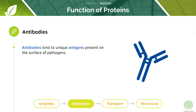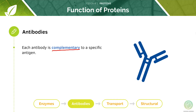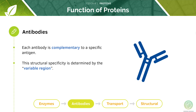Antibodies play a critical role in immune response. They directly recognise and bind to the unique antigens on the surfaces of foreign pathogens, such as bacteria and viruses. Each antibody has a unique shape allowing it to only bind to the antigen it's designed to bind to — this is called complementary. The structural specificity of the antibody is determined by something called a variable region.